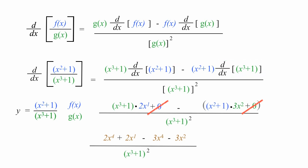I'm going to combine like terms now. 2 times x to the fourth and minus 3 times x to the fourth is equal to minus x to the fourth. Now I'll subtract 3 times x squared. Subtract that. I'll add 2 times x to the first power. And divide all this by x cubed plus 1 squared.